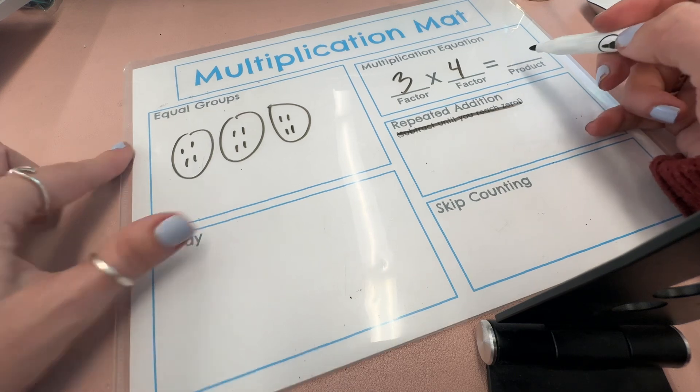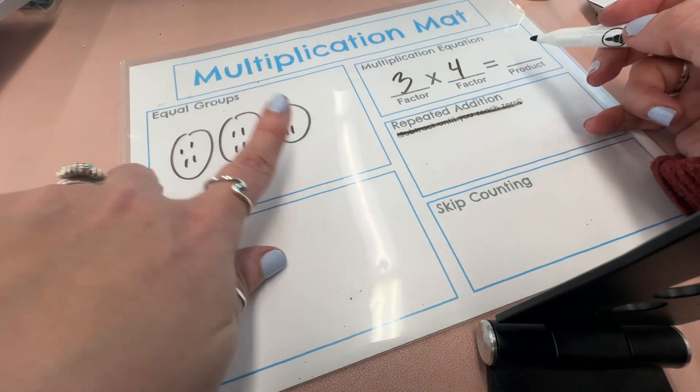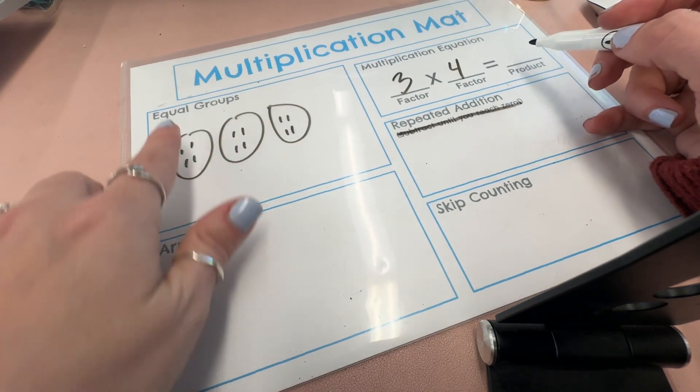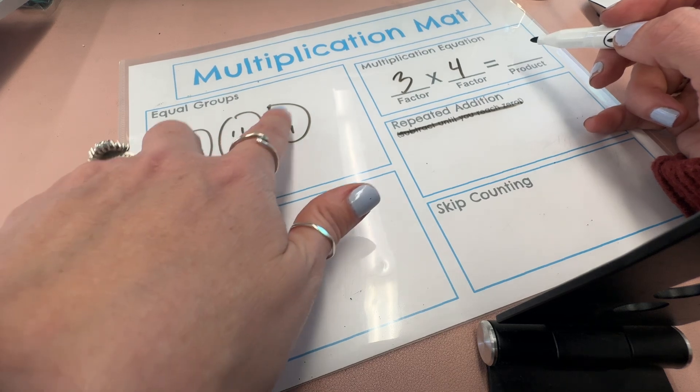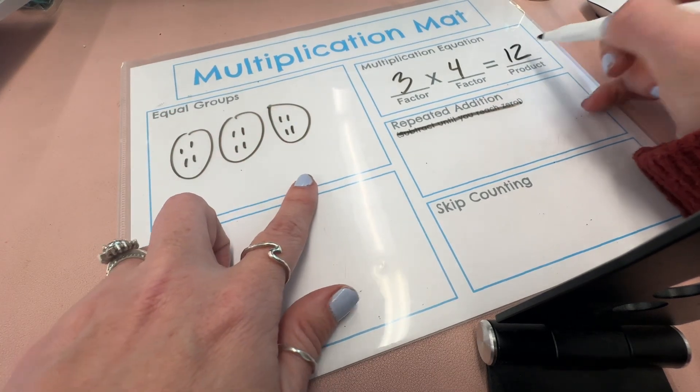To find the product, the answer, we count up all of our marks in our groups. So there's four, five, six, seven, eight, nine, ten, eleven, twelve. So the answer is twelve.